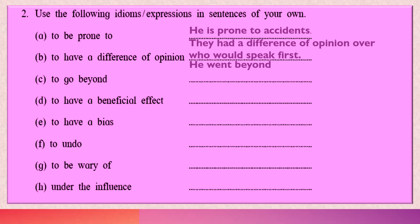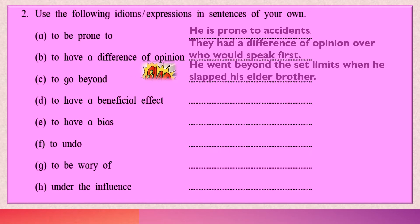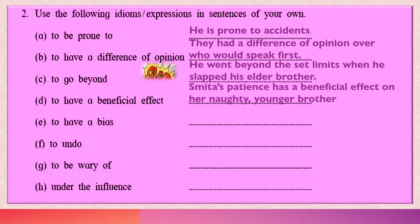'To have a beneficial effect' means to have a good effect — for example, 'Smitha's patients had a beneficial effect on her naughty younger brother Raj.' 'To have a bias' means to be partial towards someone — for example, 'Grandfather had a bias towards his youngest granddaughter.'